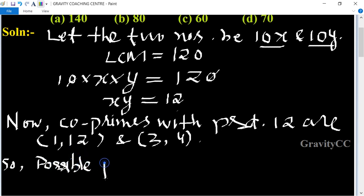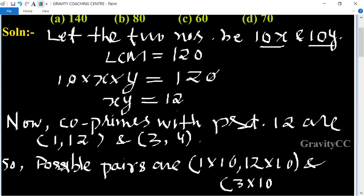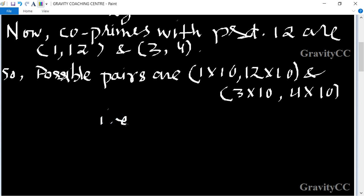So possible pairs are: 1 multiply 10, 12 multiply 10, and 3 multiply 10, 4 multiply 10. That is 10 comma 120, and 30 comma 40.